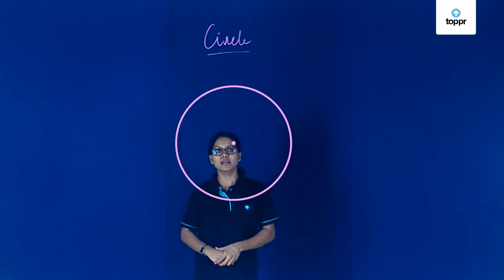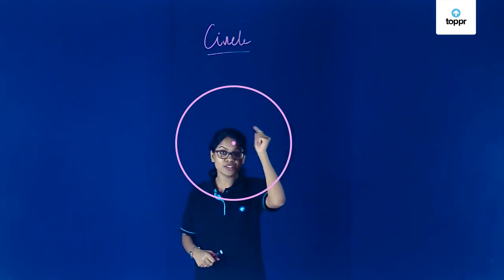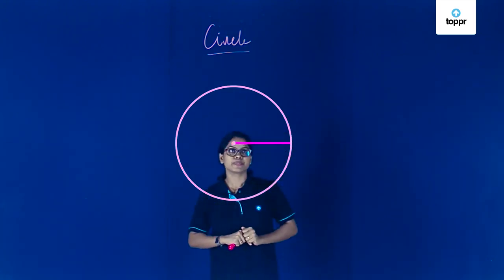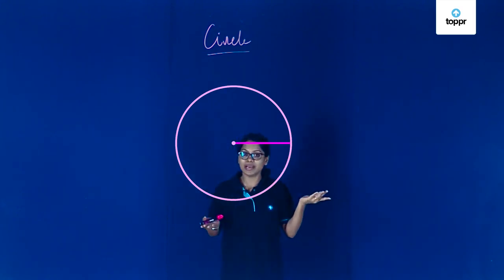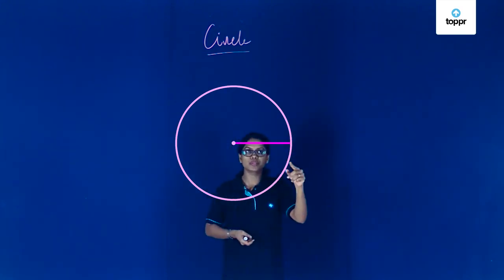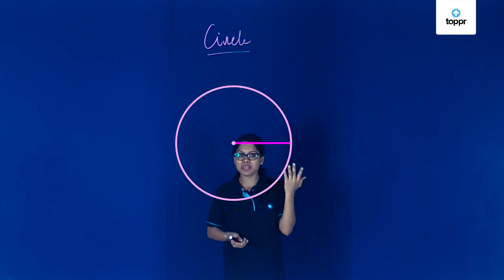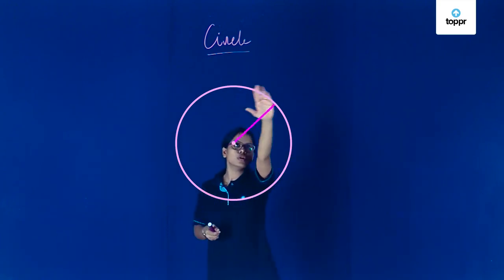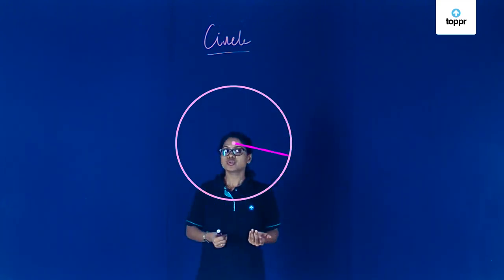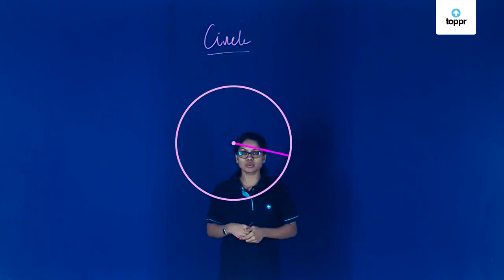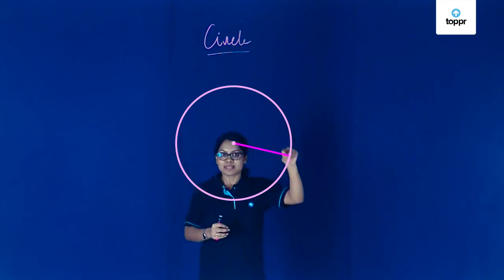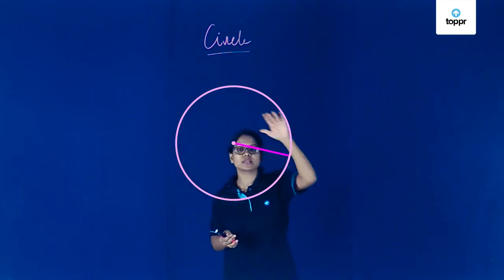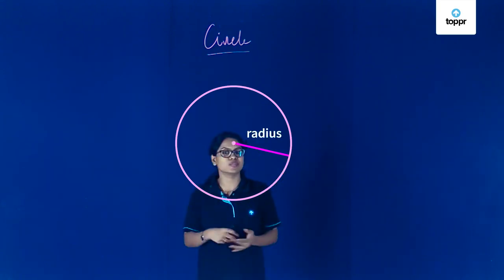What we have here is a circle, and this point that I fixed is nothing but the center of the circle. Let me draw a line from the center to the boundary. So this is a line joining the center of the circle to the boundary of the circle. Let me see what happens if I rotate it — it's like the hands of a clock. This line fits the circle throughout, meaning the length of this line segment remains the same for the whole circle. So this line segment is nothing but the radius of the circle.